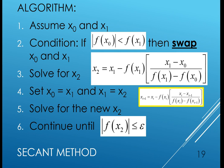Let's go to the algorithm. Step one: assume x sub zero and x sub one — or sometimes the professor will give them to you. Step two: test the condition. If the absolute value of f(x0) is less than the absolute value of f(x1), then swap x sub zero and x sub one. This is to ensure that the absolute value of the function does not increase, so that it converges more easily. You don't need to swap when f(x0) is already greater than f(x1).